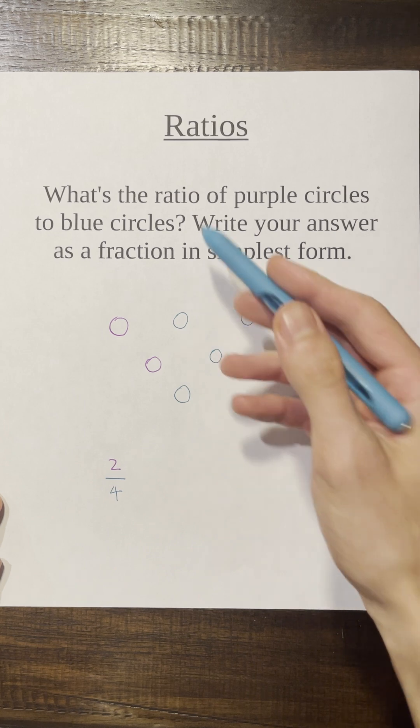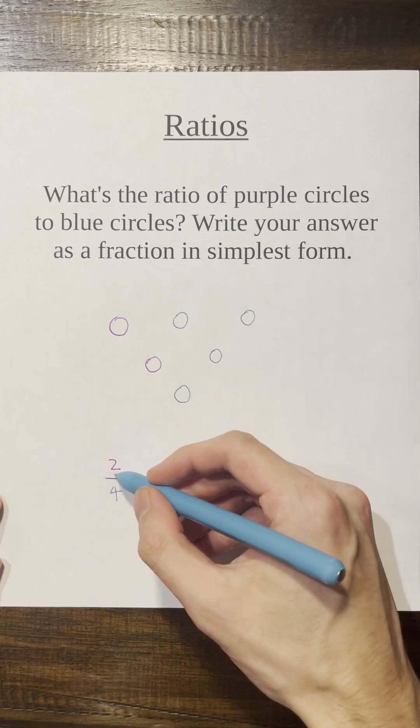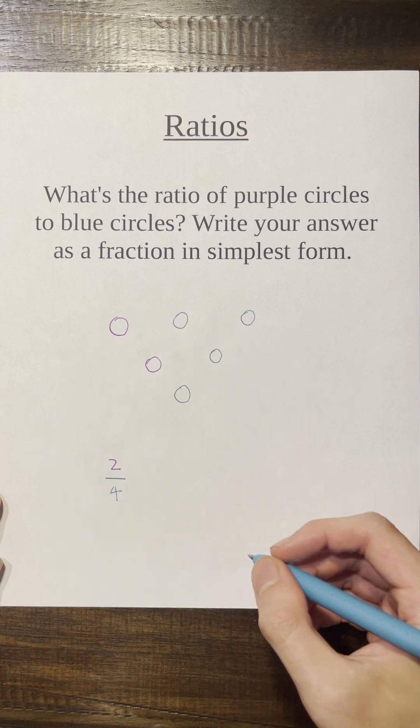Okay, so the ratio as a fraction is going to be two over four. Can we simplify this fraction?